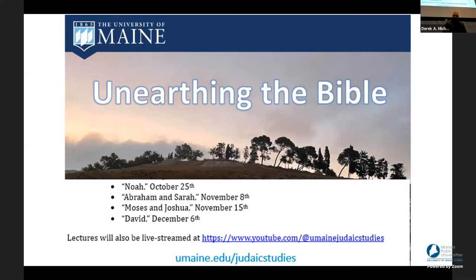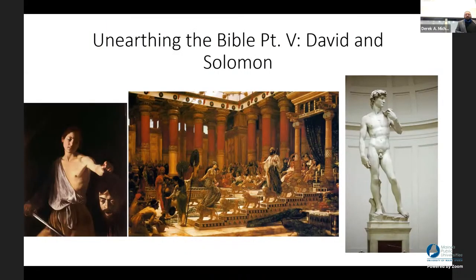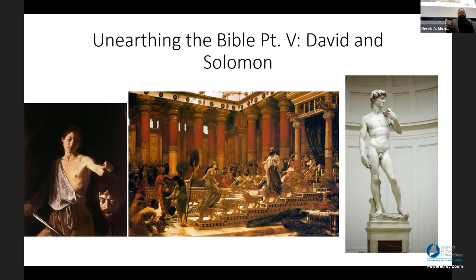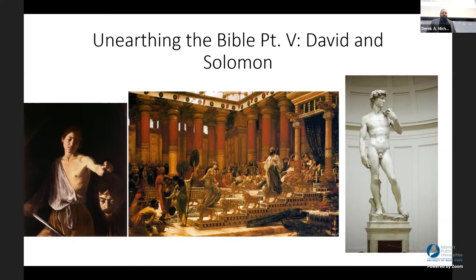We did a basic overview in week one, and since then we've been looking at specific case studies, looking at figures like Noah, Abraham and Sarah, Moses and Joshua. Today we'll be continuing with David and Solomon, getting into the foundations of the Israelite monarchy — some of our better-known figures from the Bible, popular culture, and particularly even in art, with European medieval Renaissance-style paintings and sculptures.